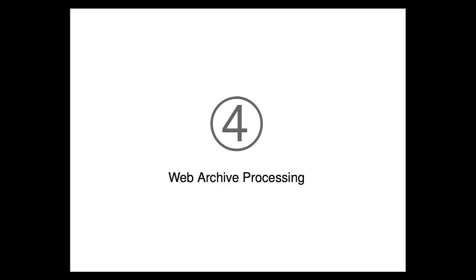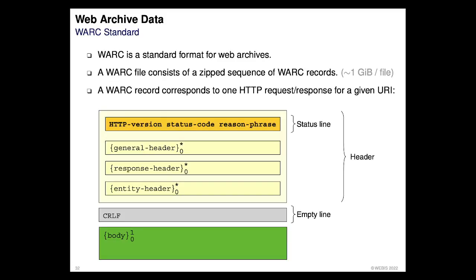Now a brief and shallow overview of the technological basics of web archive processing. The basis for a web archive is the so-called WARC file — W-A-R-C, short for Web ARChive. It's a standard developed by the Internet Archive and others. Every WARC file is, for example, one gigabyte in size, so to store the entire Internet Archive you need tens or hundreds of millions of them distributed across machines. The file size cap is to make each individual file more manageable.